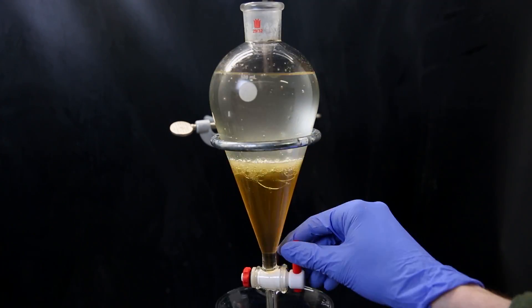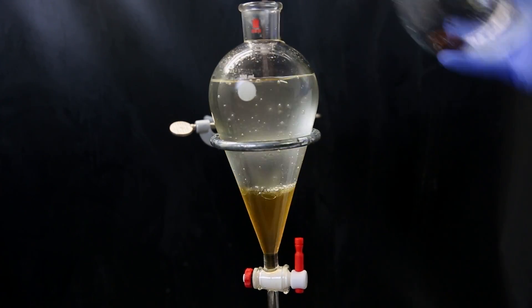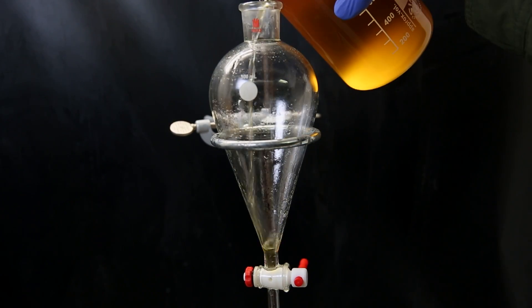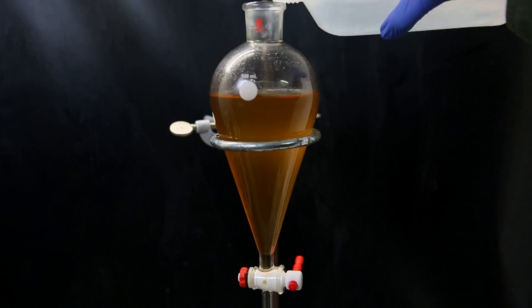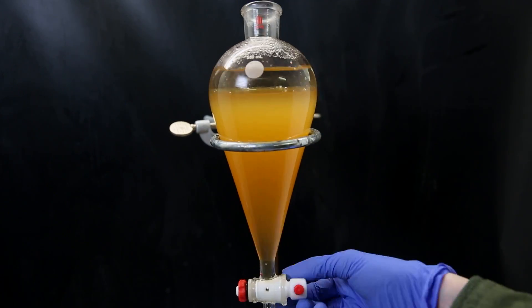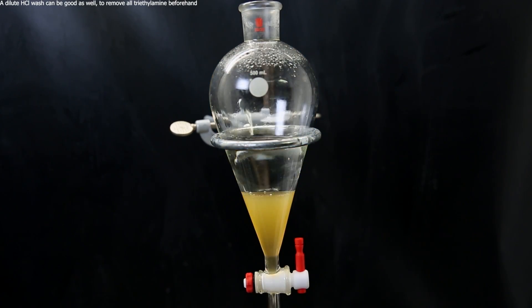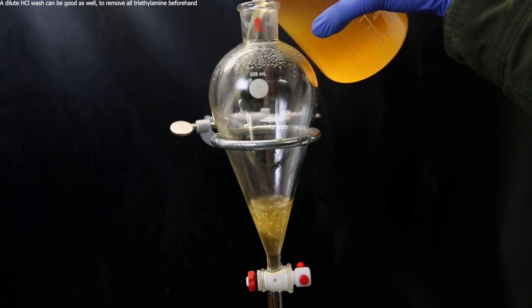I then move it all to a separatory funnel, and separate the layers. I discard the water layer, and then return the DCM layer to the separatory funnel. I wash it once with water, to be sure all the salts are taken out. I separate the layers again, and then return the DCM layer once more.